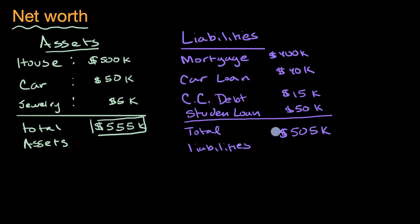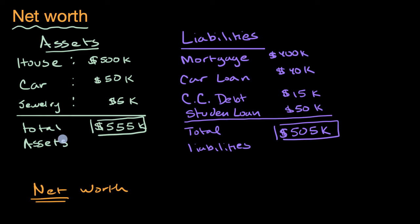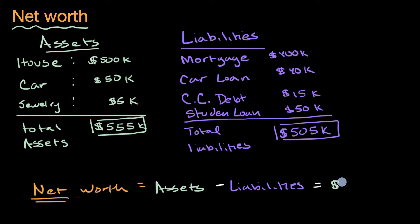So what would you think this person's net worth is? To figure out net worth — and the word 'net' here is a clue — you're thinking about not just how much you have, but net of, minus, what you owe. Net worth equals total assets minus total liabilities. In this scenario, that's $555,000 minus $505,000, which equals $50,000. So even though this person has over half a million dollars in assets, their net worth is $50,000, because we subtracted out all the things they owe.